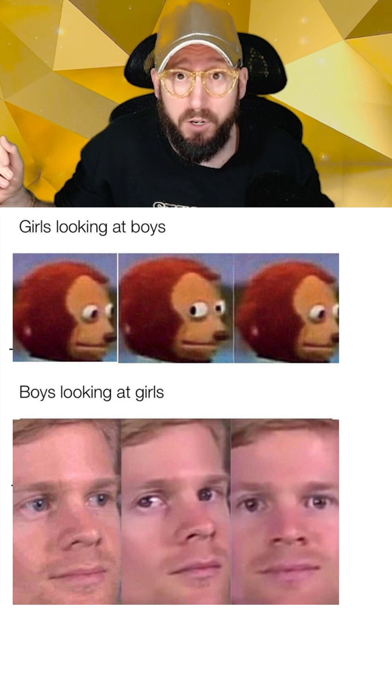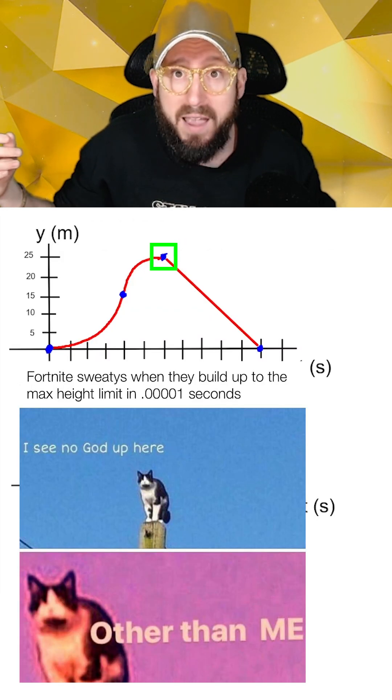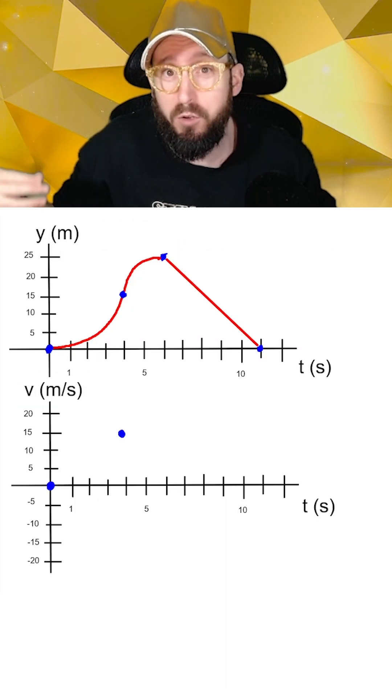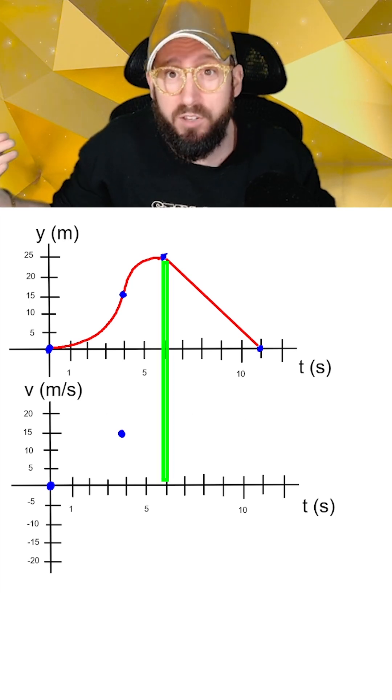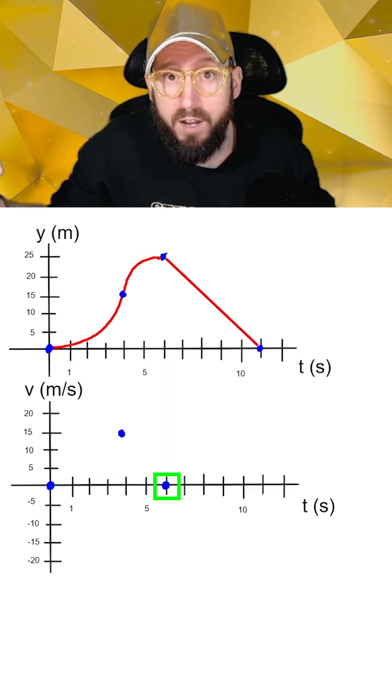Now looking at our next critical time point when t equals six, the dog has reached its maximum height and the slope of the position graph goes back to a horizontal line. This means that the slope is zero. So at t equals six on our velocity graph, we're going to put a dot at v equals zero.